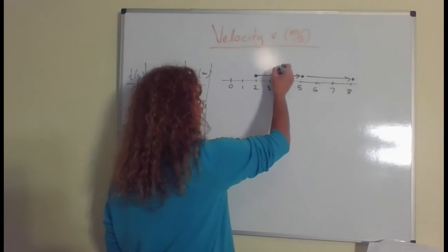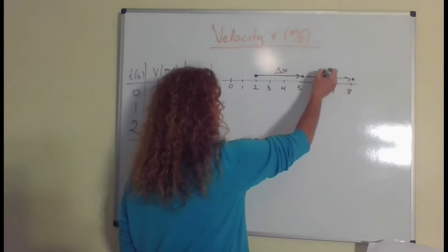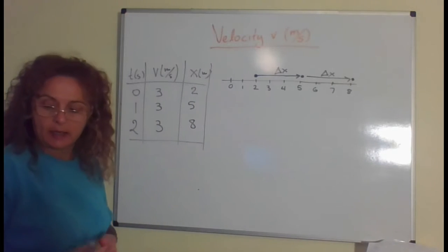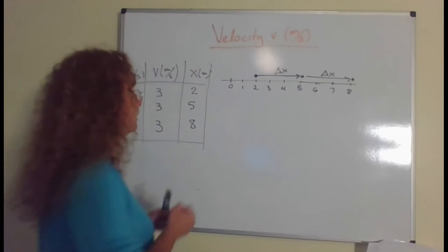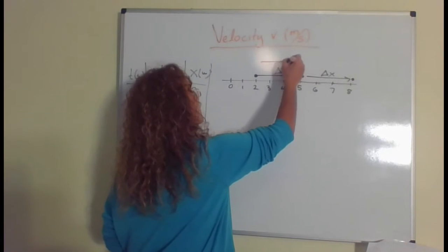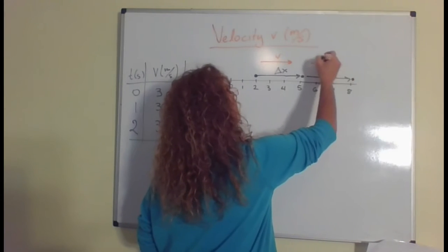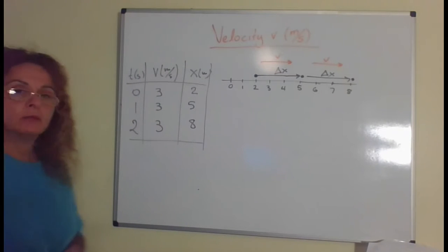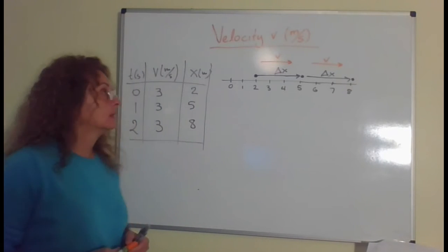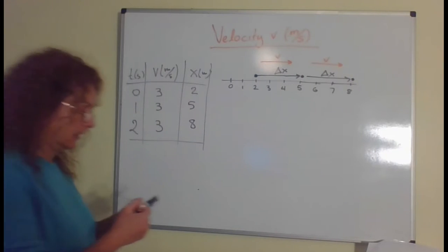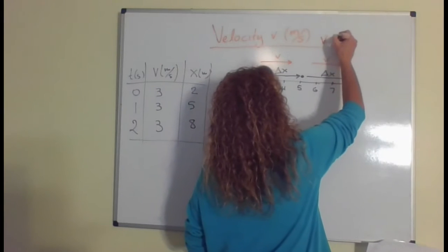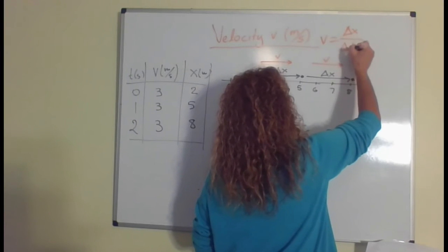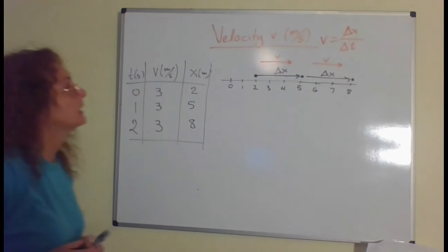We have this arrow showing the displacement and the velocity is an arrow that has the same direction. It's a vector quantity, has the same direction with the displacement always, and is found, the definition we said, displacement over change in time, slope, rise over run. The same thing.